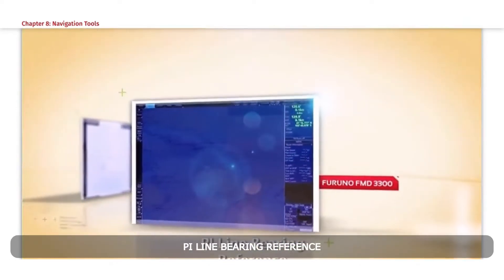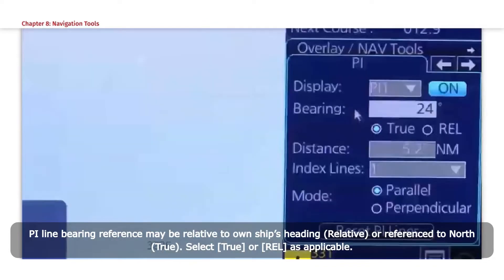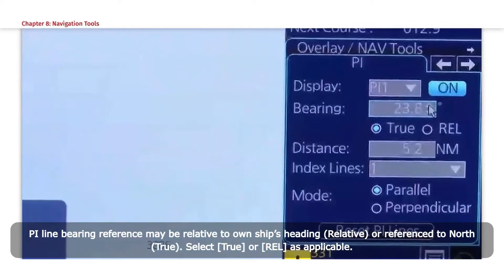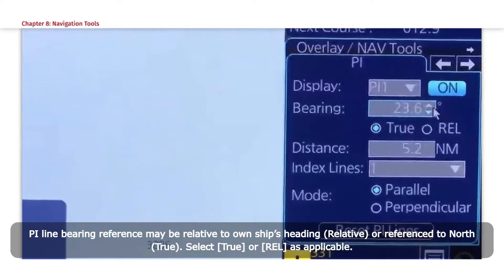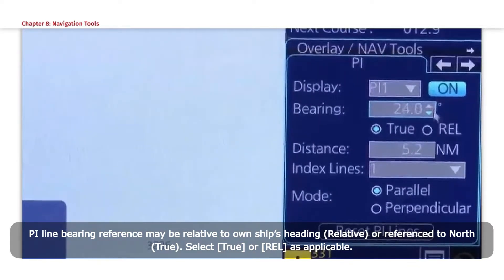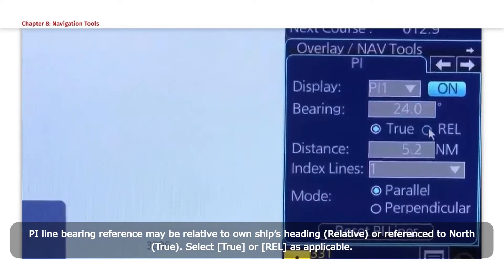PI Line Bearing Reference: PI Line Bearing Reference may be Relative to Own Ship's Heading (Relative) or Referenced to North (True). Select True or REL as applicable.